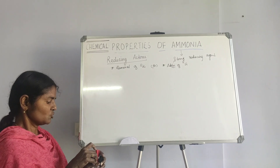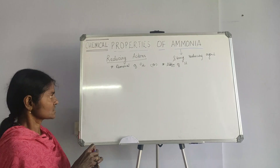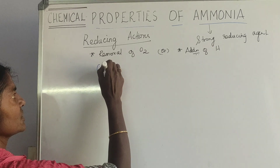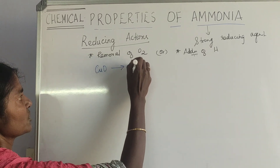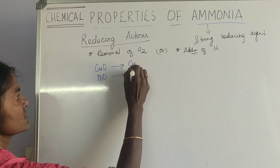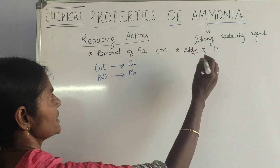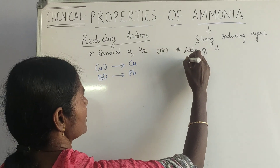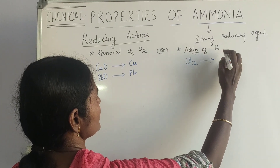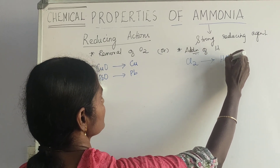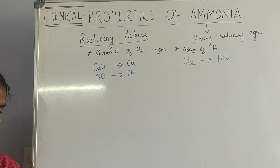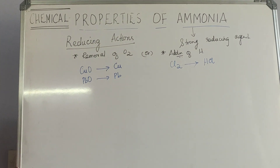When it is removal of oxygen, we have copper oxide reduced to copper, lead oxide reduced to lead. And when it is addition of hydrogen, chlorine is reduced to hydrogen chloride. These are the equations and reactions that we are going to look into.